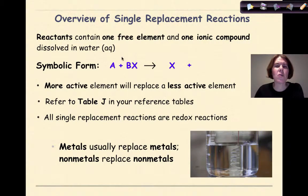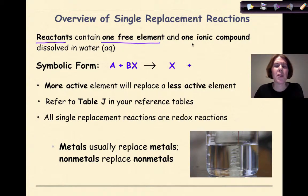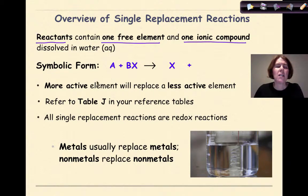Here's an overview of single replacement reactions. Single replacement reactions are going to have reactants that contain one free element and one ionic compound. That's how you're going to recognize them, and that ionic compound is going to be dissolved in water so our electrons can move. In symbolic form, we can represent our one free element by A, and our one ionic compound by BX.